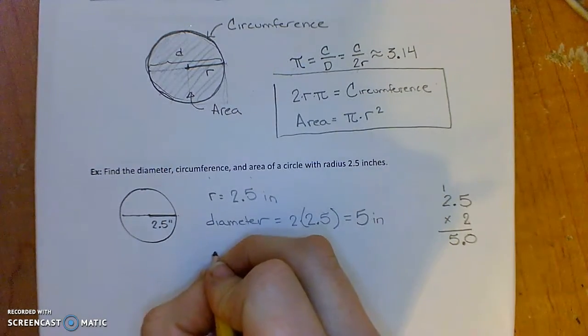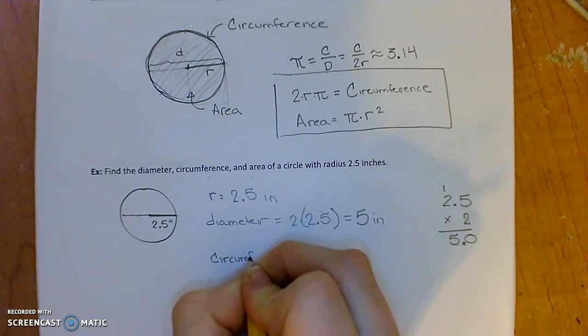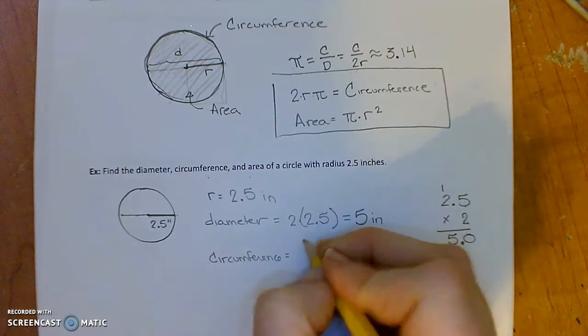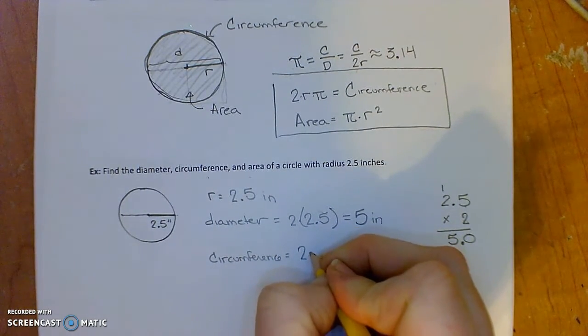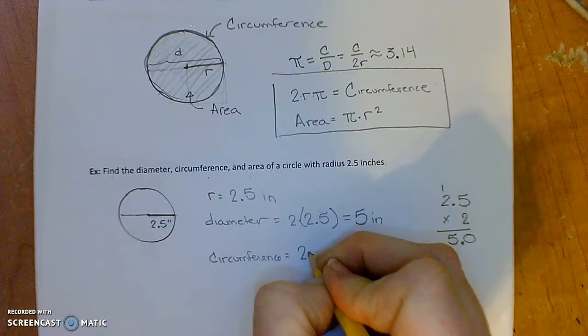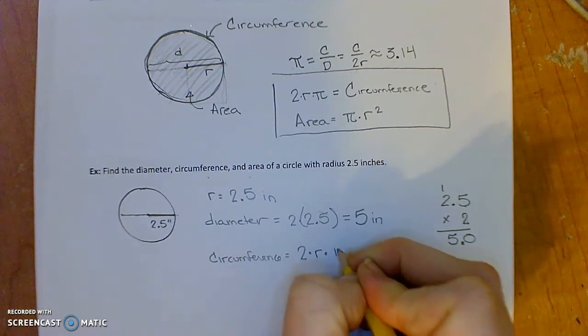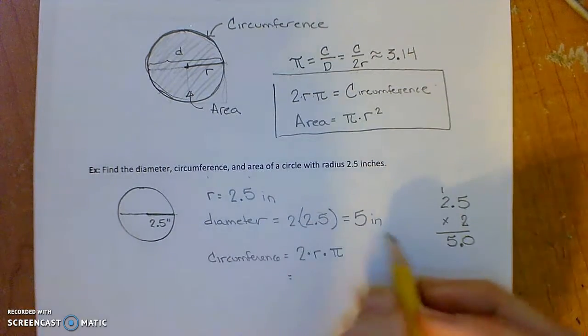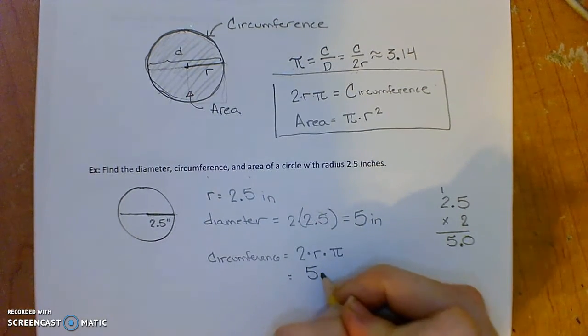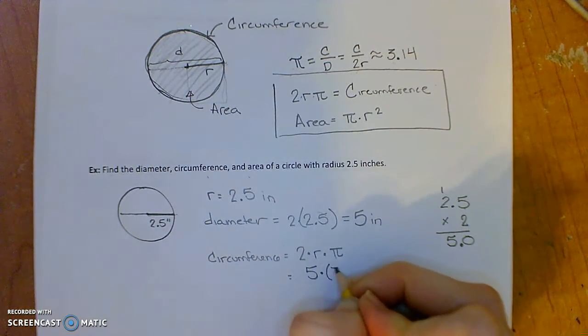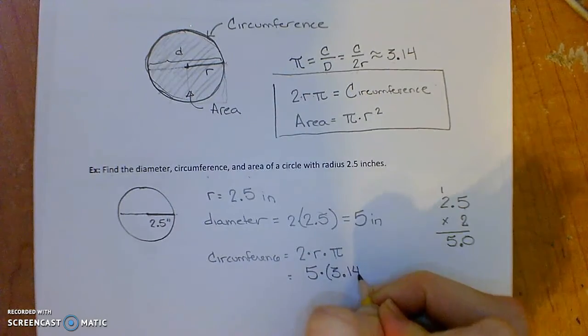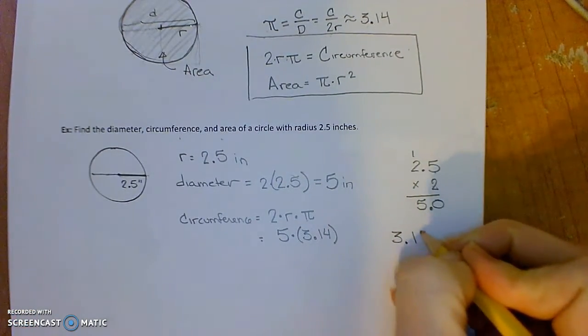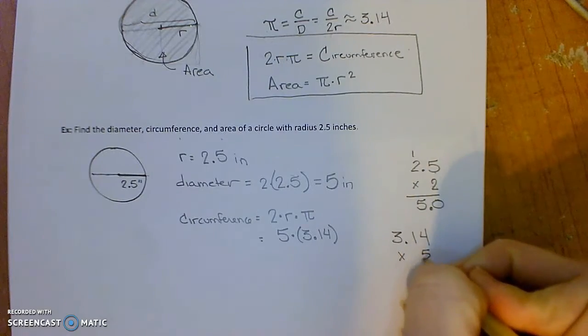Now circumference will be 2 times r times pi. 2 times r I already calculated, that's 5, times pi. I'll use the approximation 3.14 for pi, so let's do that on the side of my paper here, 3.14 times 5.